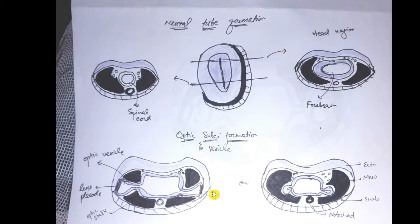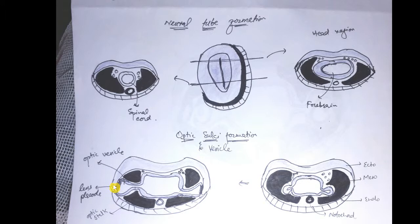The optic sulci move laterally and finally meet the surface ectoderm. Under the influence of this neuroectoderm, the surface ectoderm gets thickened, and this thickened surface ectoderm is called the lens placode. The ectoderm that formed the neural tube is called neuroectoderm, while this surface ectoderm forms the lens placode.